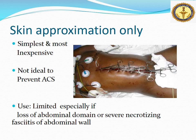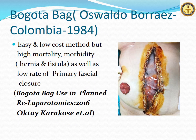Skin approximation only is the simplest and most inexpensive temporary abdominal closure device, but it is not ideal for preventing abdominal compartment syndrome, and its use is limited especially when there is loss of abdominal domain or severe necrotizing fasciitis. The Bogota bag became known worldwide in 1984 after first use by Oswaldo Borraez in Colombia. Although easy and low cost, it was associated with high mortality and morbidity, as well as a low rate of primary fascial closure, limiting its popularity.